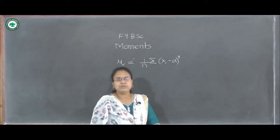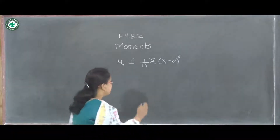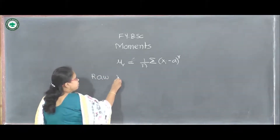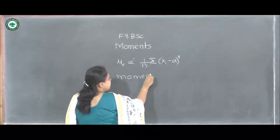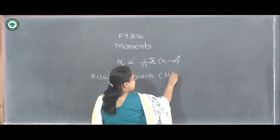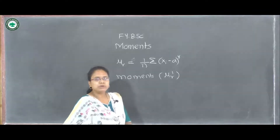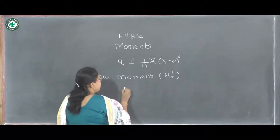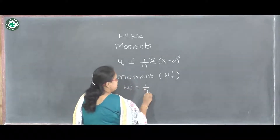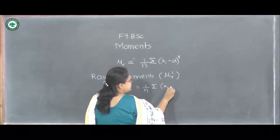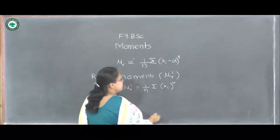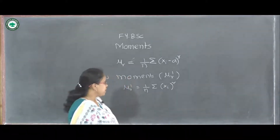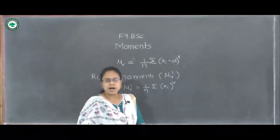If we choose a equal to 0, then we get the raw moments, and they are denoted by μr dash. These are the moments about the origin. If we take a equal to 0, then μr dash equals (1/n) into summation of (xi minus 0) raised to r, which simplifies to (1/n) summation of xi raised to r. This is the definition to calculate the rth raw moment. Similarly, by substituting the value of r as 1, 2, 3, and so on, we get each raw moment.